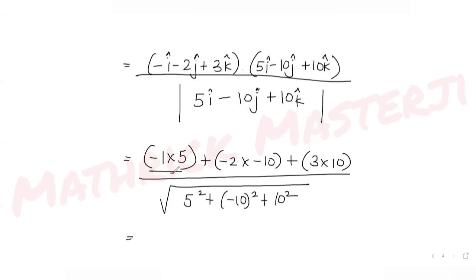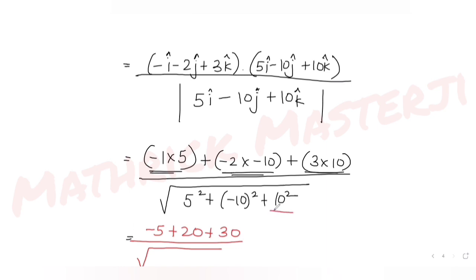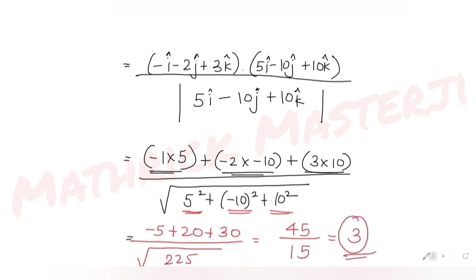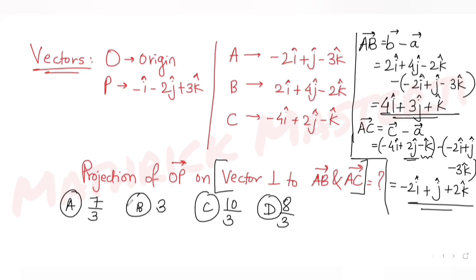The magnitude of D is square root of 25 plus 100 plus 100, which equals square root of 225, which equals 15. So the projection is 45 divided by 15, which equals 3. The answer for the question is 3.